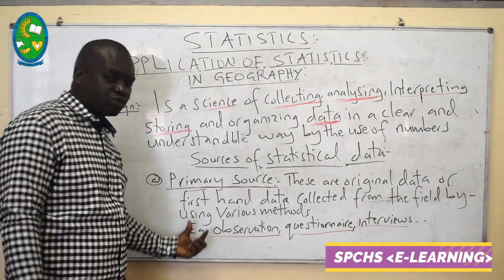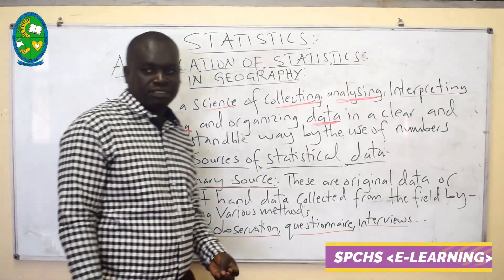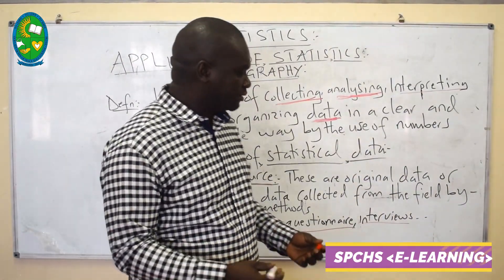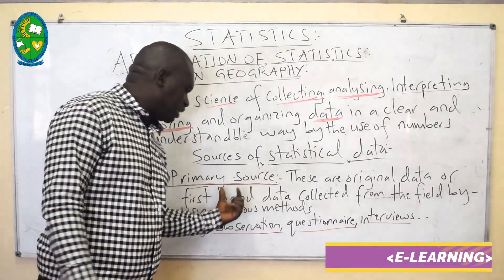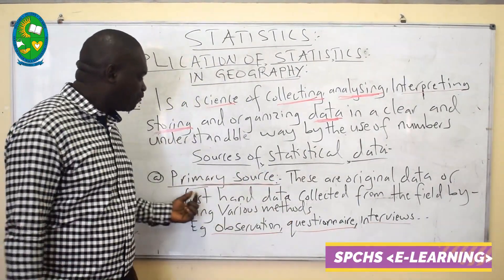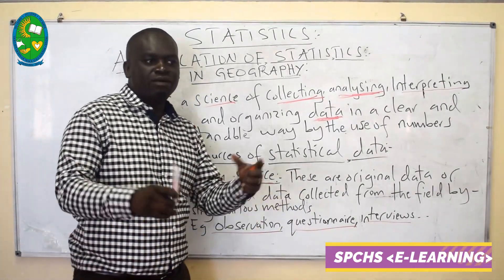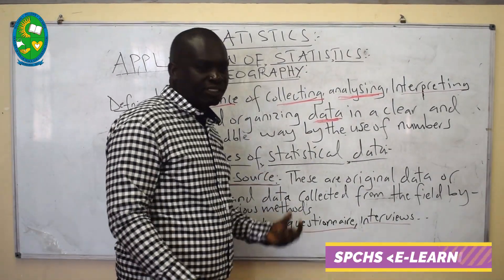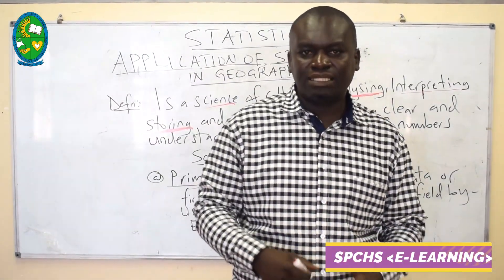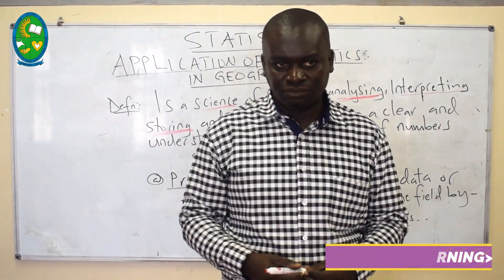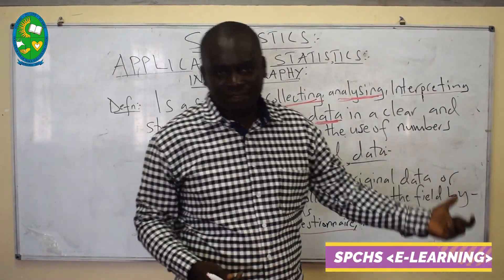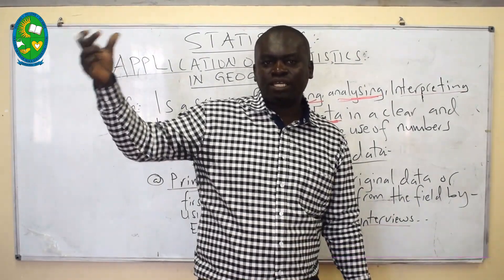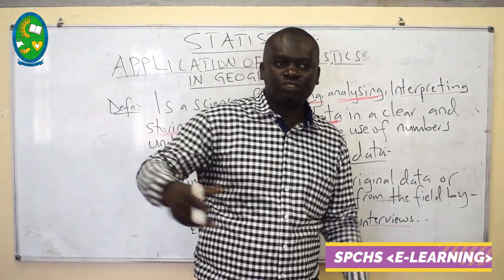We have the primary source and also we have the secondary source. When we say secondary source, secondary source means second-hand data. In the primary, these are the original or first-hand data which have never been collected by another person. But when we talk about secondary data, this is the data which is already collected by another researcher. For example, you can obtain data from a magazine or from TV programs — such data is already collected and represented by another person.